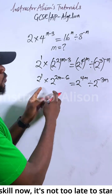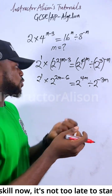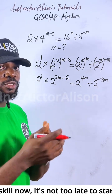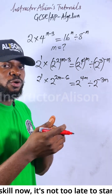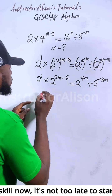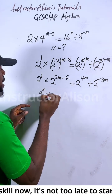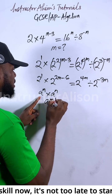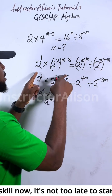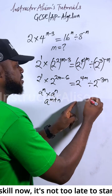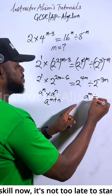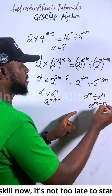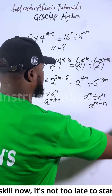Now what you want to do is apply the laws of indices. We have two laws: the first one is the product law, and the other one is the division law, also called the quotient law. The product law says: a to the power of m times a to the power of n — since the base is the same, just take one of the bases and add the powers. For the quotient law: a to the power of m divided by a to the power of n — since the base is the same, take one of the bases and subtract the powers.